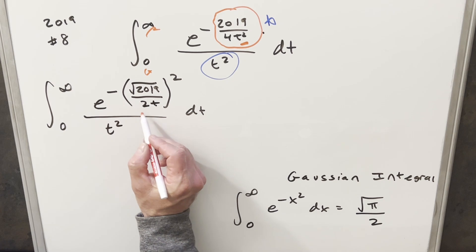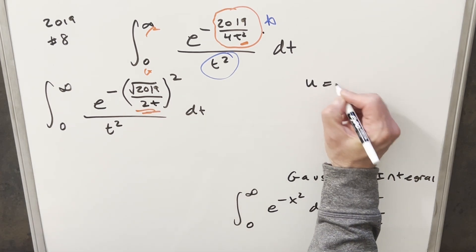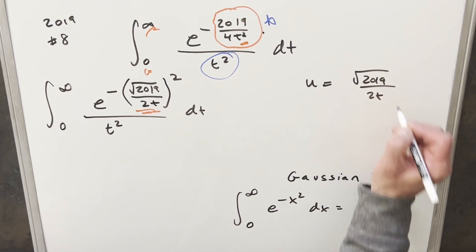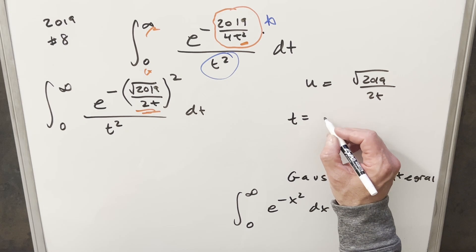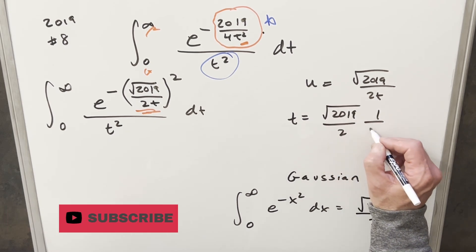And then what I want to do from here is let's just do a u substitution for all this stuff right here. So coming over here, we'll set u equal to the square root of 2019 over 2t. And I think actually we'll solve for t. So bringing t to the other side, I can rewrite this as square root of 2019 over 2. And then this is going to be 1 over u.